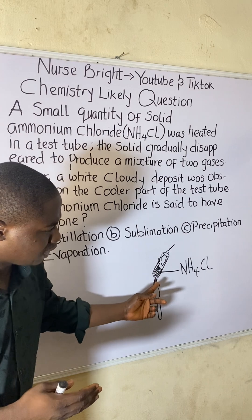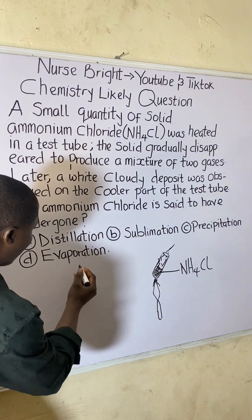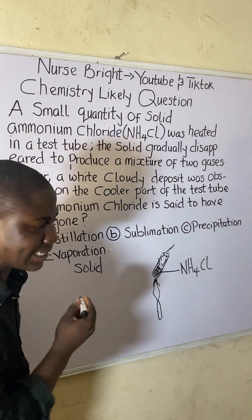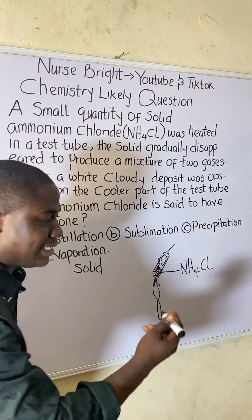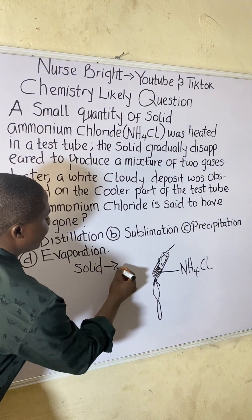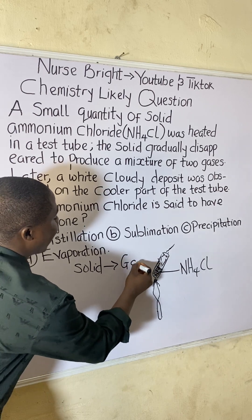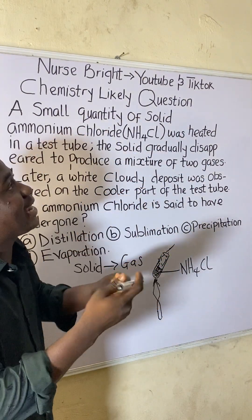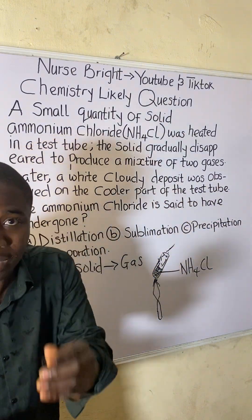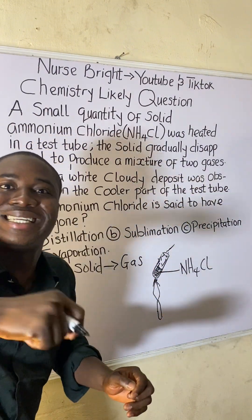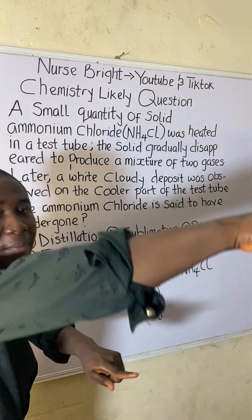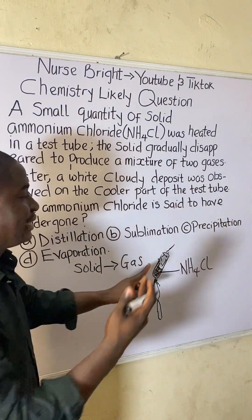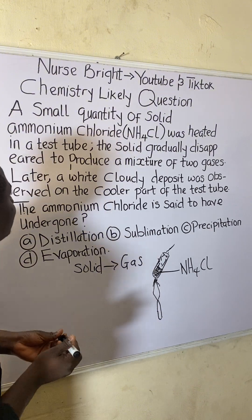The compound was in solid state, and when we started heating it, that solid was gradually disappearing and changing to a gas. They specified it was a mixture of two gases - but the key point is that this solid was forming a gas during the process of heating.